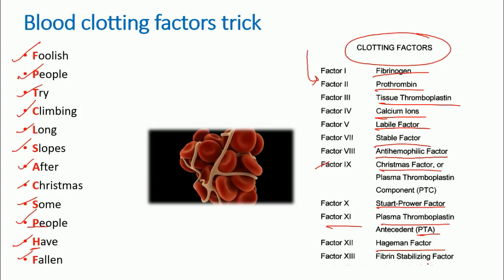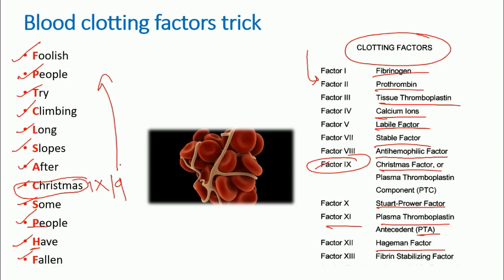The best way to check whether you are correct about all thirteen is to use Christmas factor as your anchor — Christmas factor is factor number nine. So the eight factors above it and the four factors below it should be correct, since this factor's name is exactly the same in the mnemonic sentence as in the actual factor name.